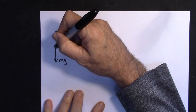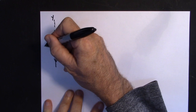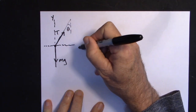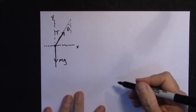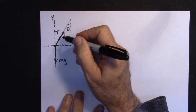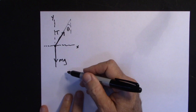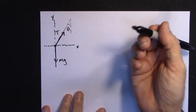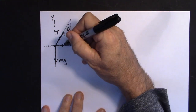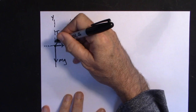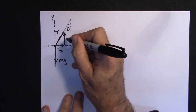Let's put a coordinate system in there: here's the Y direction and here's the X direction, with the origin at the object's center of mass. Now I'm going to break the tension force T into an X and Y component, since it's not currently along either axis. I'll call these T sub X and T sub Y.